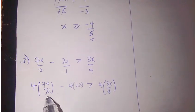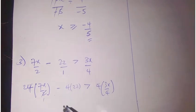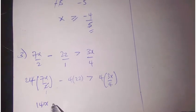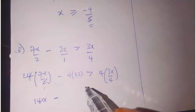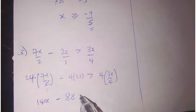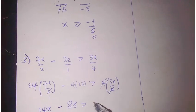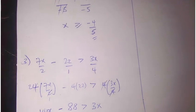On dividing, this becomes 2. So 2 times 7 here is 14x minus 4 times 22 is 88 to be greater than 3x, because these cancel themselves.